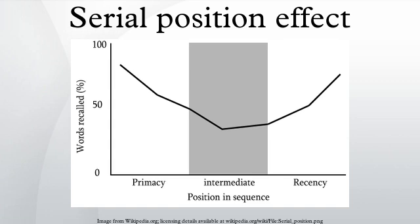In another study, the subjects received one of two sentences. For example, one may describe Steve as smart, diligent, critical, impulsive, and jealous; while the other describes Steve as jealous, impulsive, critical, diligent, and smart. These two sentences contain the same information, but the first suggests positive traits at the beginning while the second has negative traits first. Researchers found that subjects evaluated Steve more positively when given the first sentence compared to the second.